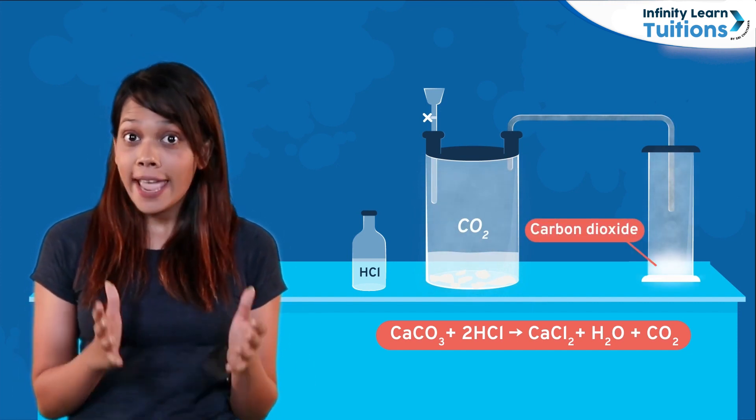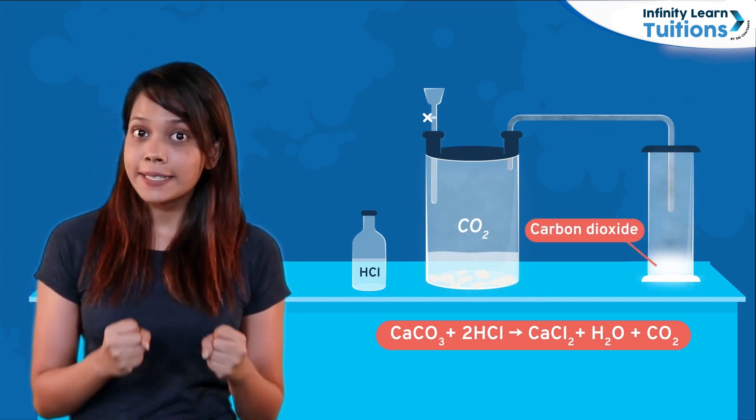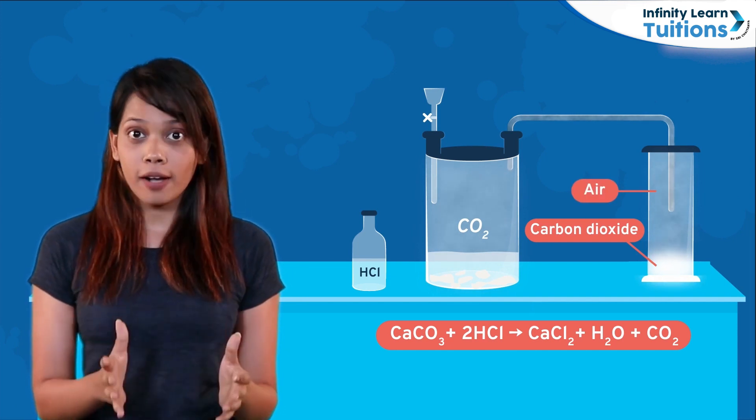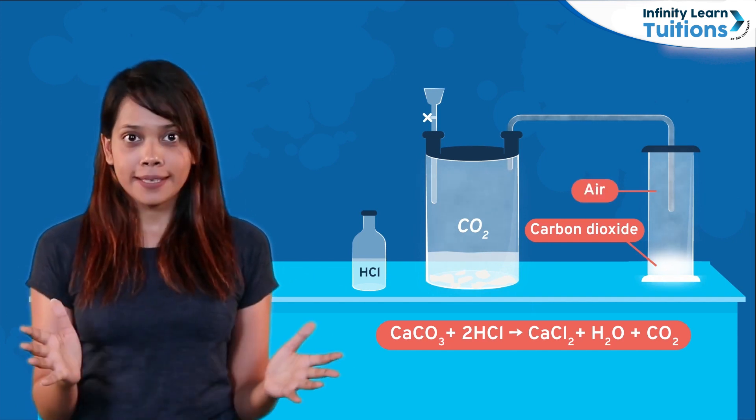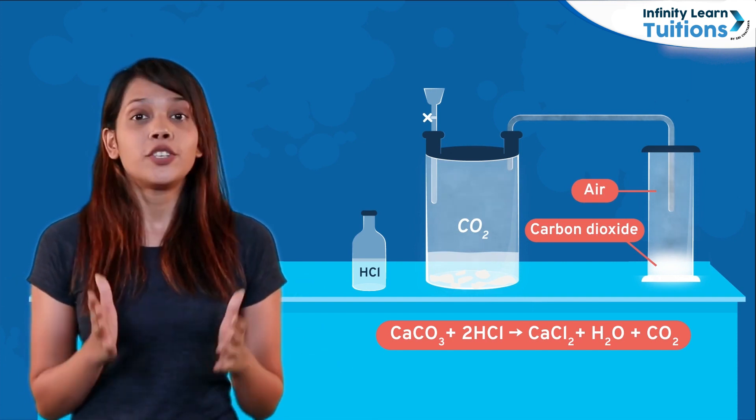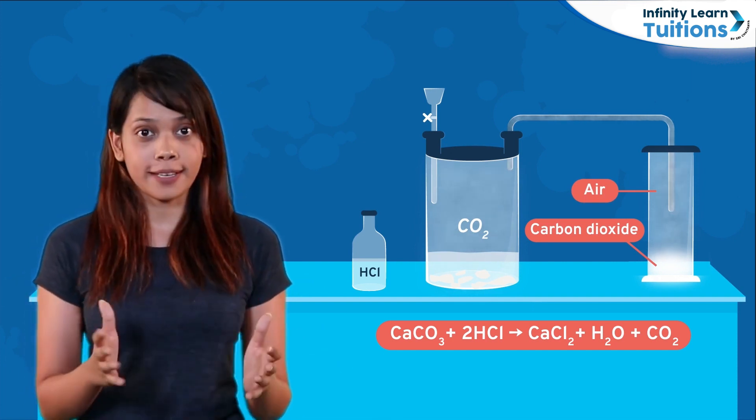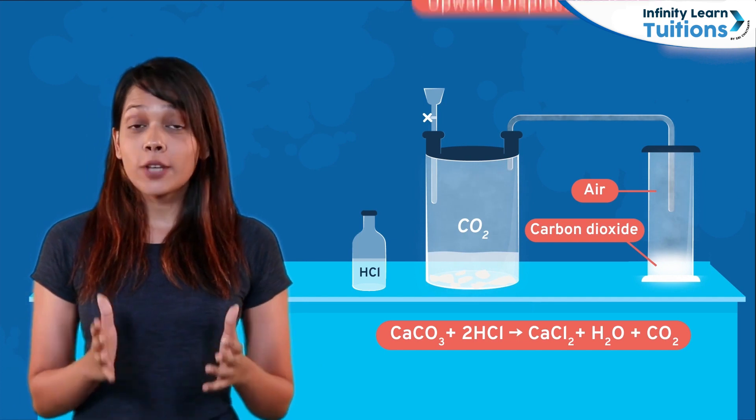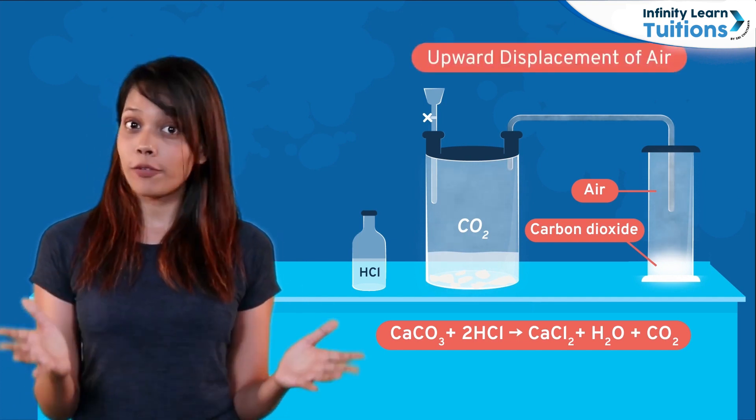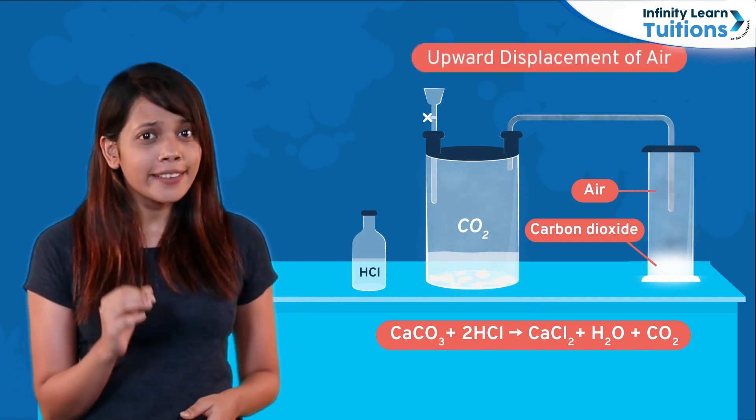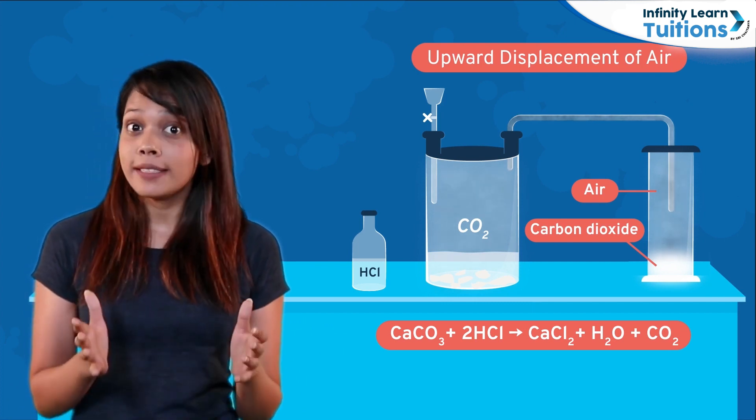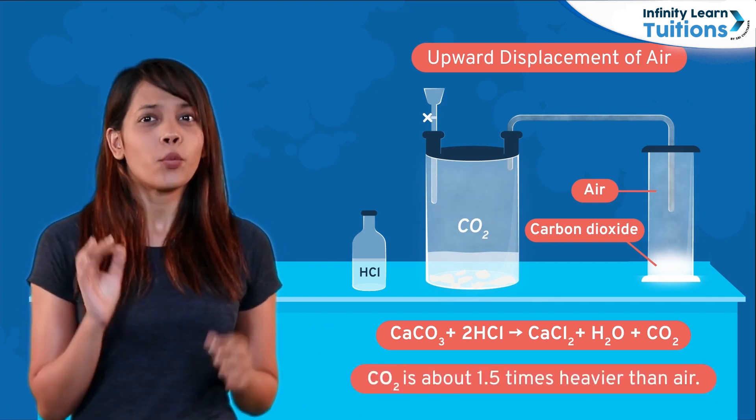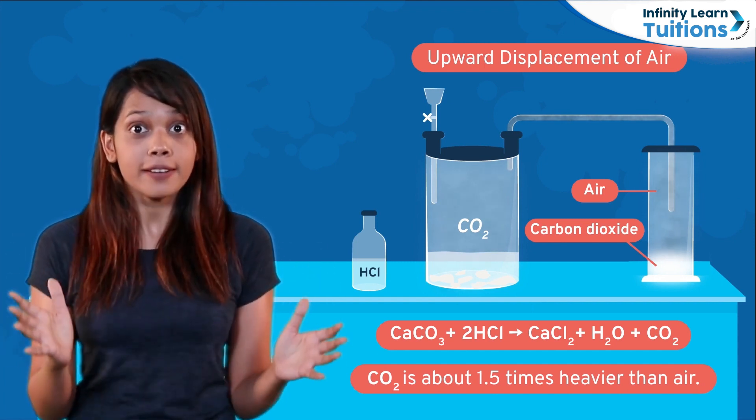Since carbon dioxide is heavier than air, it sinks below and the air in the jar floats above it. Thus, the air is displaced in an upward direction during the collection of carbon dioxide. This method is called the upward displacement of air. We can clearly see that the density of carbon dioxide is more than that of air. It is about 1.5 times heavier than air.